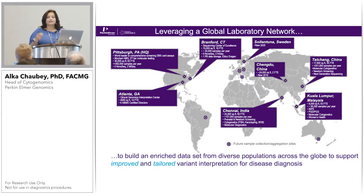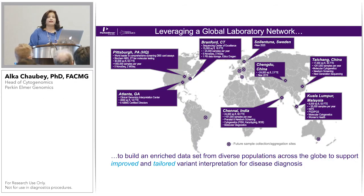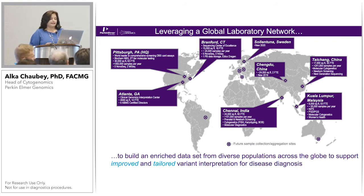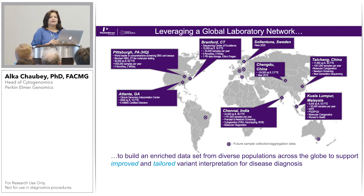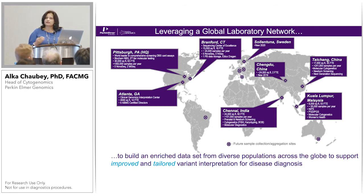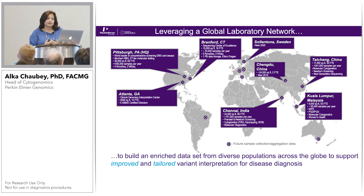So why am I here? I'm part of Perkin-Elmer Genomics, and we have a global laboratory network with labs in India, Malaysia, China, Solentuna Sweden, and two labs in the U.S. All the reporting directors are based in Atlanta. Our vice president and chief scientific officer is Dr. Madhuri Hegre, renowned in the field of neuromuscular disorders and muscular dystrophy. So this disorder was very, very important for us.